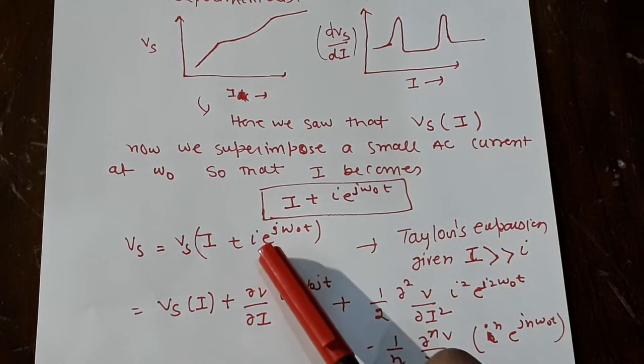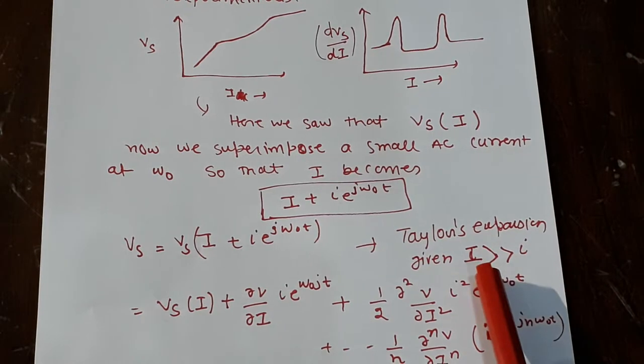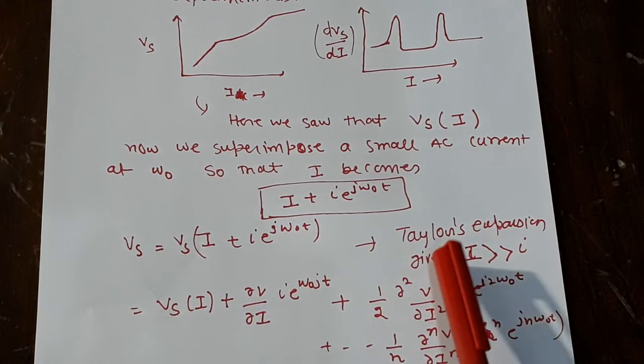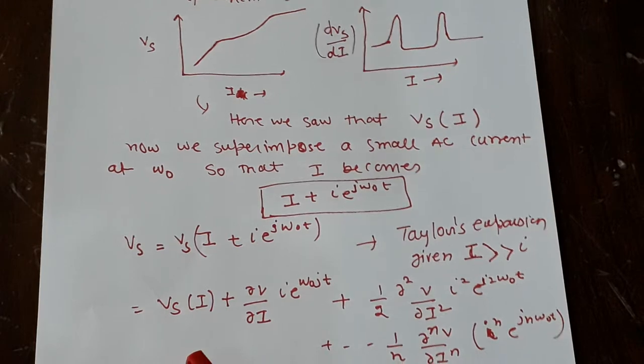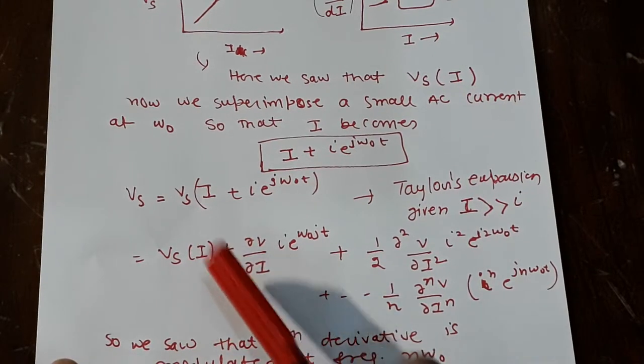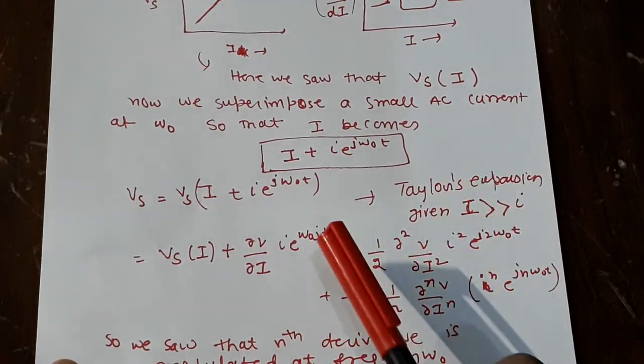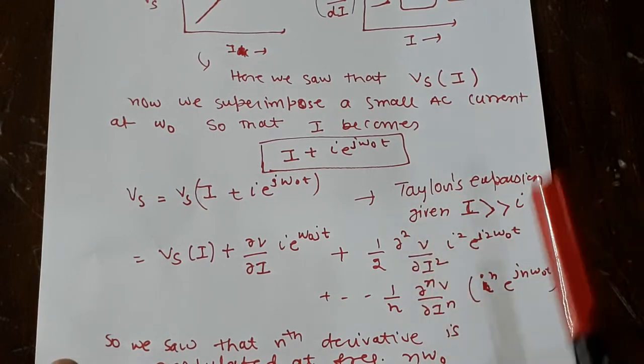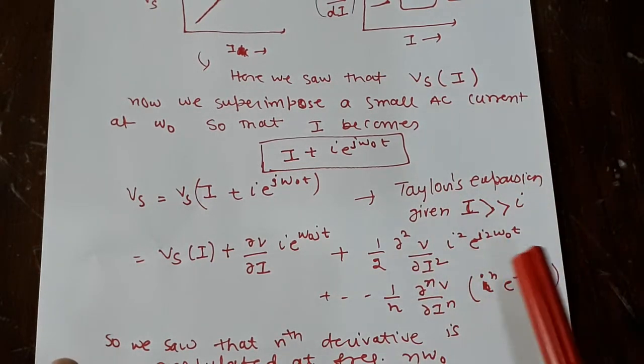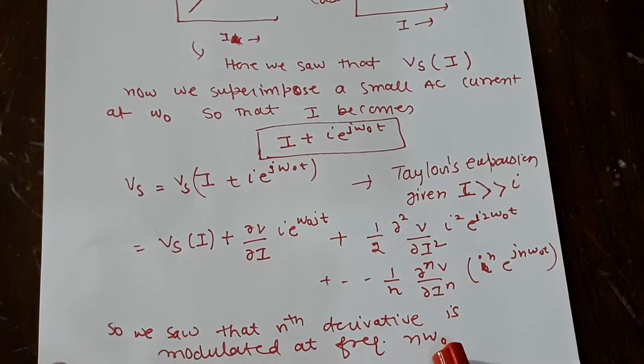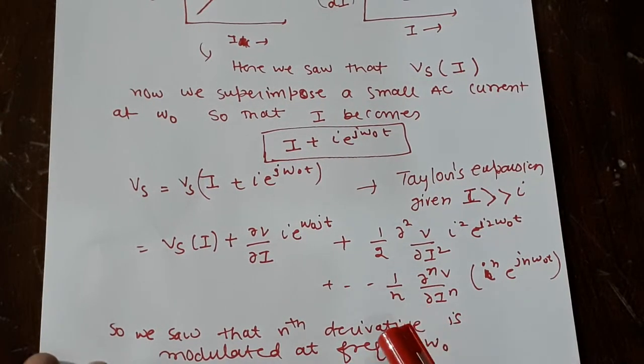Now, if this I is very very small compared to I, I can Taylor expand it. That's very easy. So everyone knows the Taylor expansion, you get V_s(I) + dV/dI times I e^(jω₀t) + second derivative terms with I² e^(j2ω₀t), and so on.